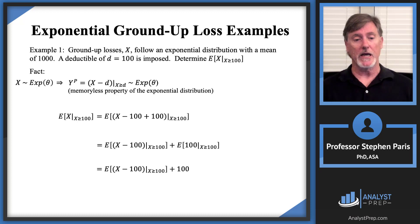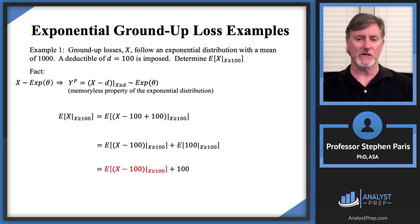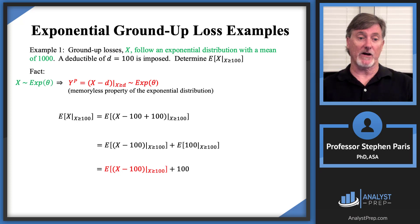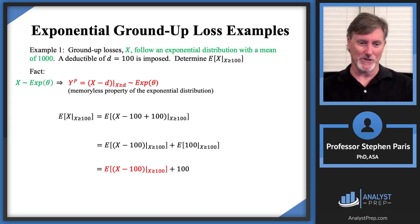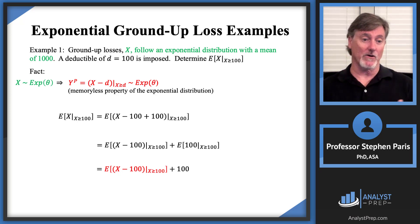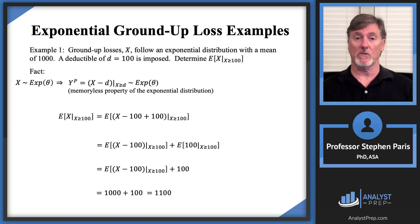The first term — the expected value of cap X minus 100 given cap X is greater than or equal to 100 — is the expected value of the payment per payment random variable. From the memoryless property of the exponential distribution, that's just theta, or 1,000 here. So my answer is 1,000 plus 100, or 1,100. Very easy — it took just four lines.